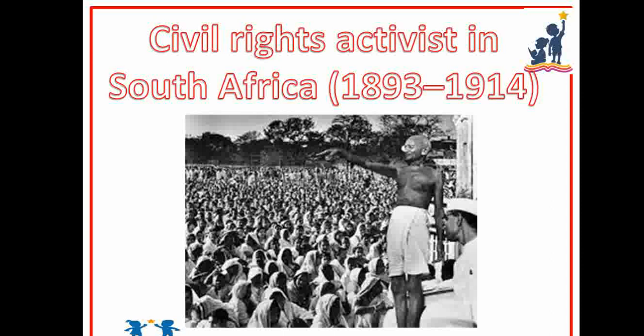Gandhiji was a civil rights activist in South Africa from 1893 to 1914. At the age of 23, Gandhiji went to South Africa. He was not allowed to sit with European passengers due to the colour of his skin, so he was forced to sit on the floor near the driver. He refused and started civil rights activism from 1893 to 1914. Finally, the government enforced an act.